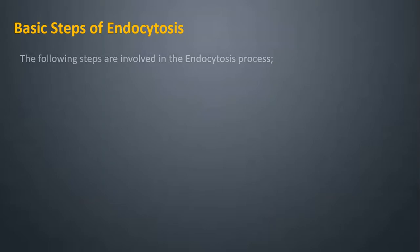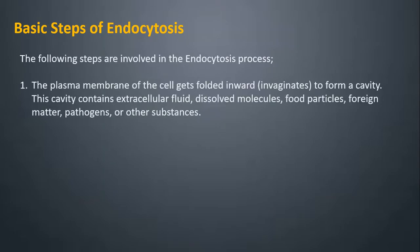Basic steps of endocytosis: The following steps are involved in the endocytosis process. The plasma membrane of the cell gets folded inward, invaginates, to form a cavity. This cavity contains extracellular fluid, dissolved molecules, food particles, foreign matter, pathogens, or other substances.